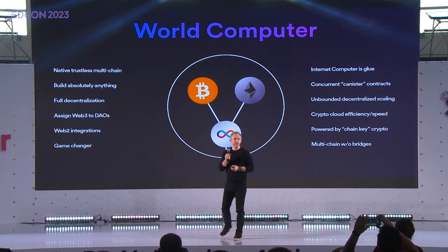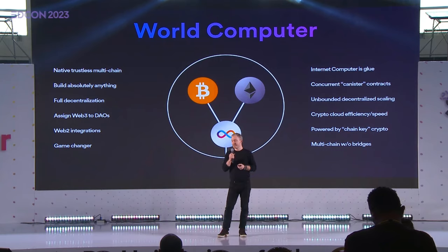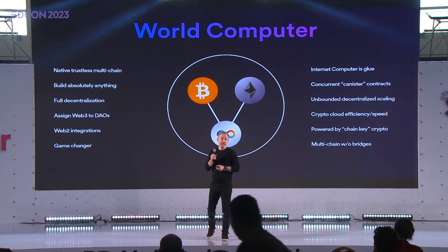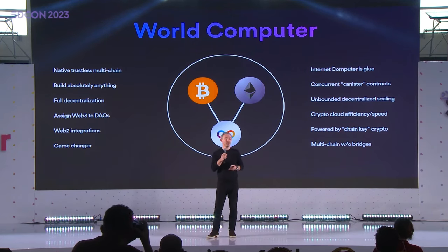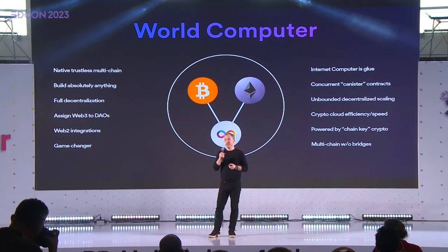So what does this world computer do? If you can combine different chains and add crypto cloud functionality, one of the things it can do is trustless multi-chains. The internet computer can interact with other blockchains without bridges. You can build absolutely anything on it — a mass market social network that runs end-to-end in a decentralized way. You can assign Web3 services to DAOs with full automation, not just voting on text proposals. And you can integrate with Web2. So it's a big potential game changer.